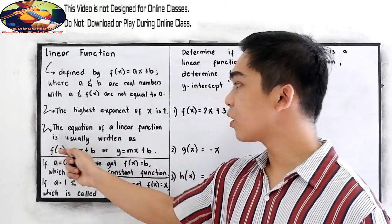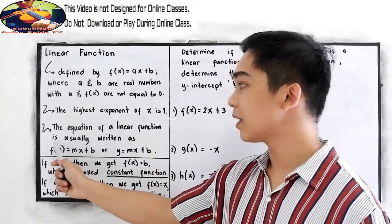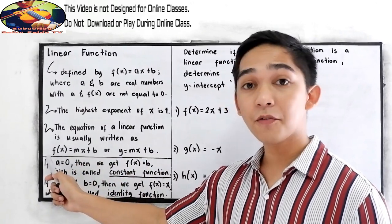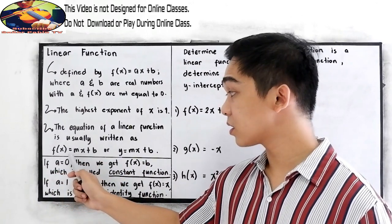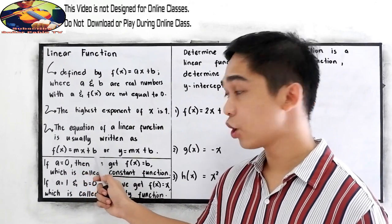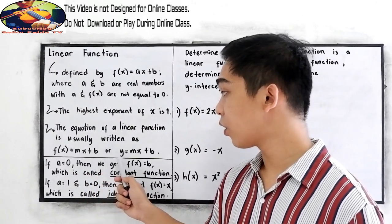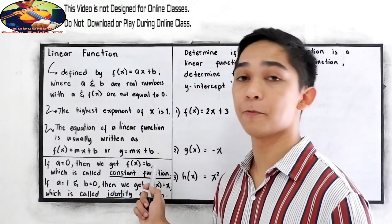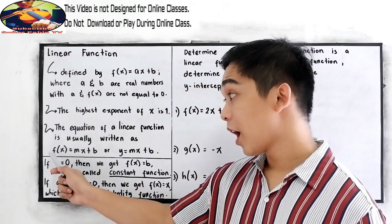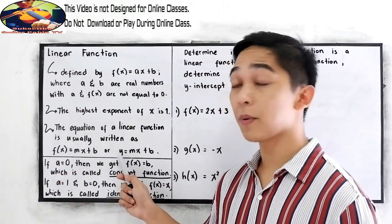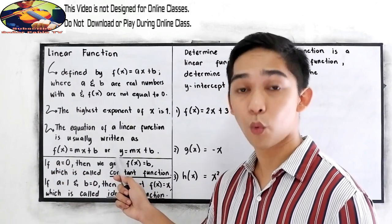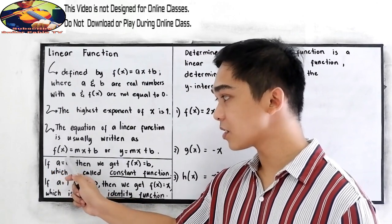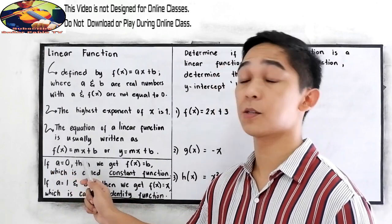The equation of a linear function is usually written as f of x is equal to mx plus b, or y is equal to mx plus b. f of x can be replaced by y, or written as the function of x is equal to mx plus b.